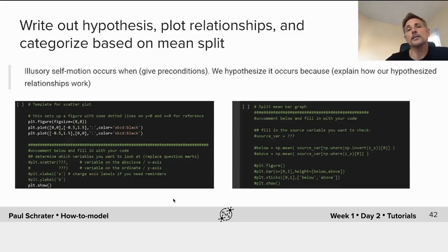What we're going to do in this step is write out our hypothesis, plot the relationships that are applied by these algebraic equations, and then categorize using this variable Z, which will encode our understanding that some of the vestibular signals would be detected and some would not be. So in general, illusory self-motion will occur when, and then you'll have to identify the preconditions. We hypothesize it occurs because, and then you'll explain how our hypothesized relationships work.